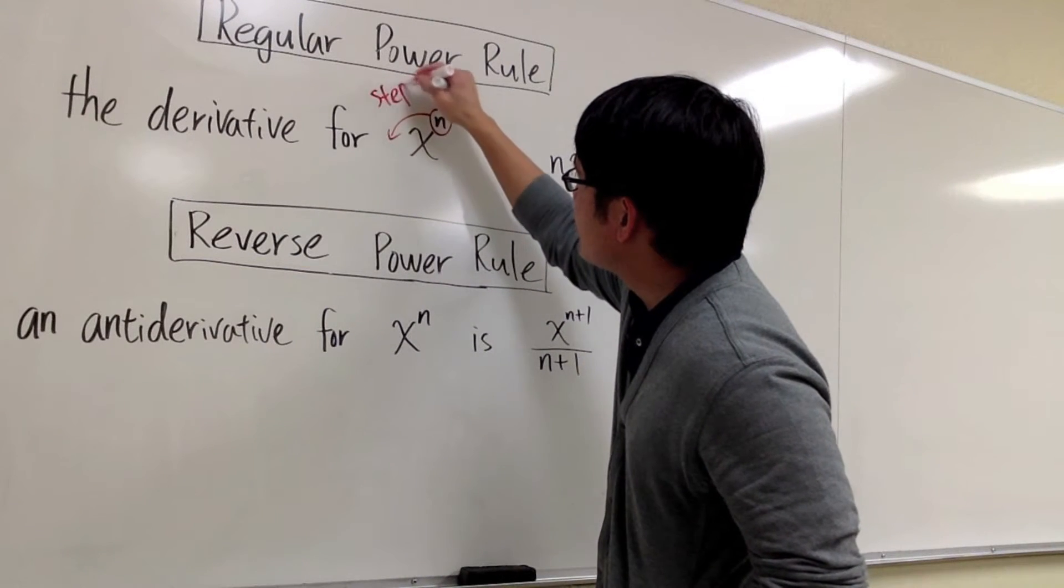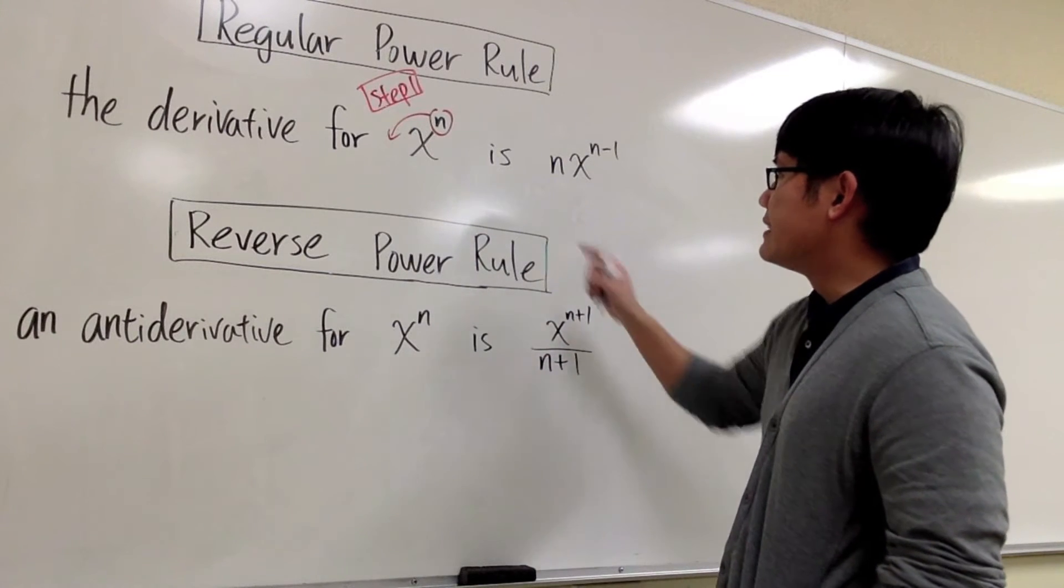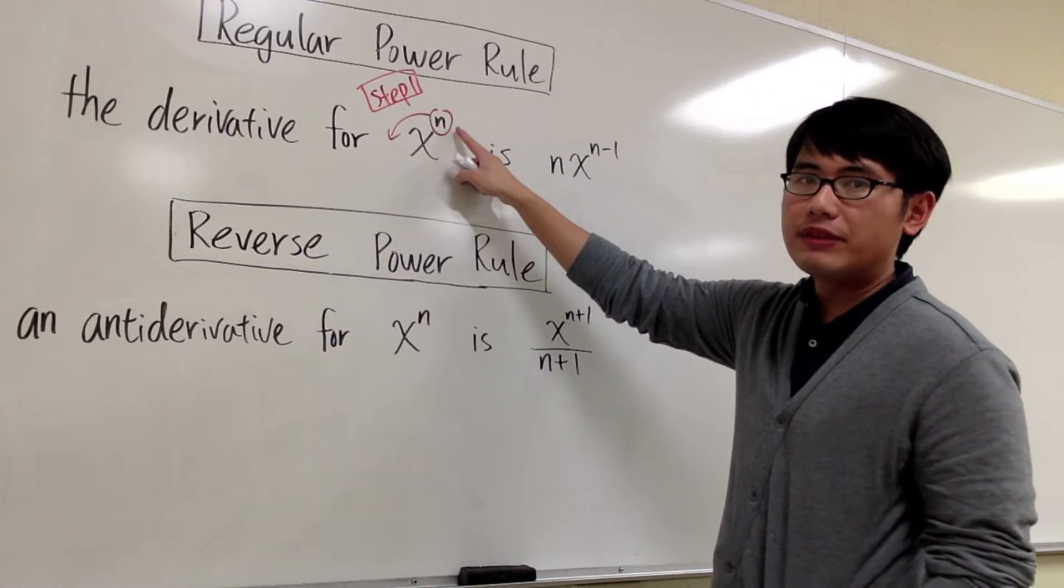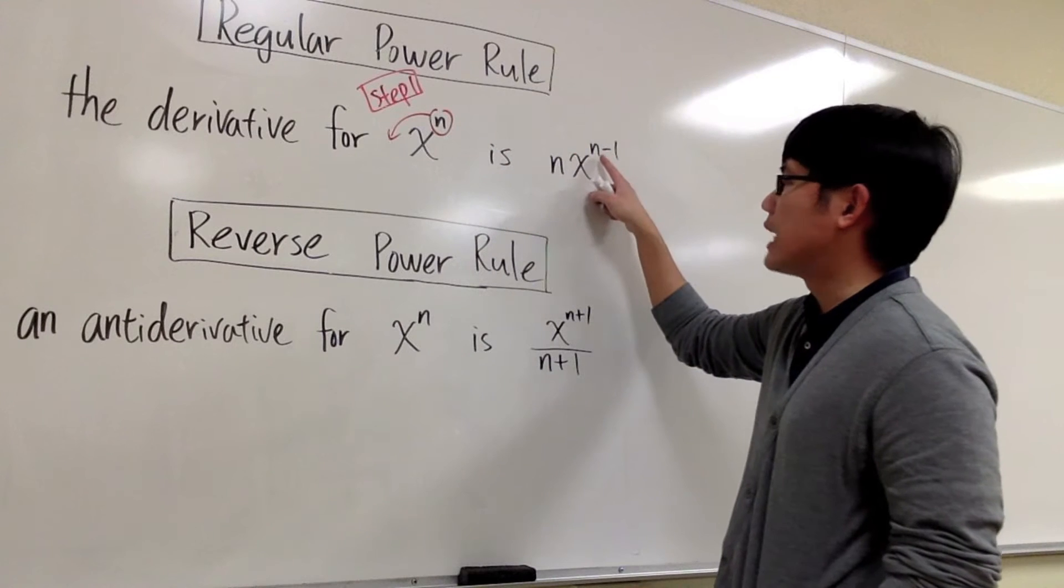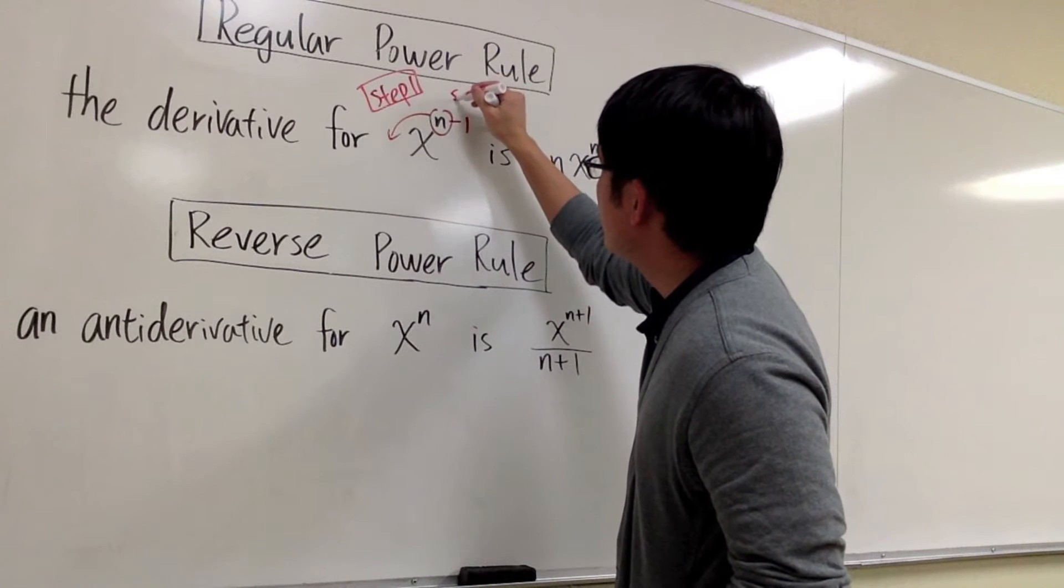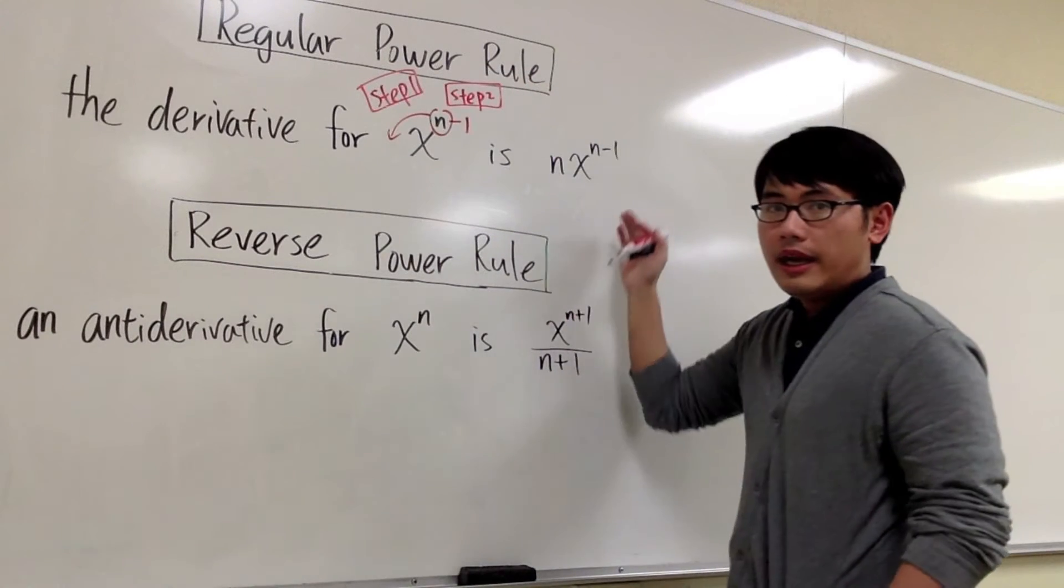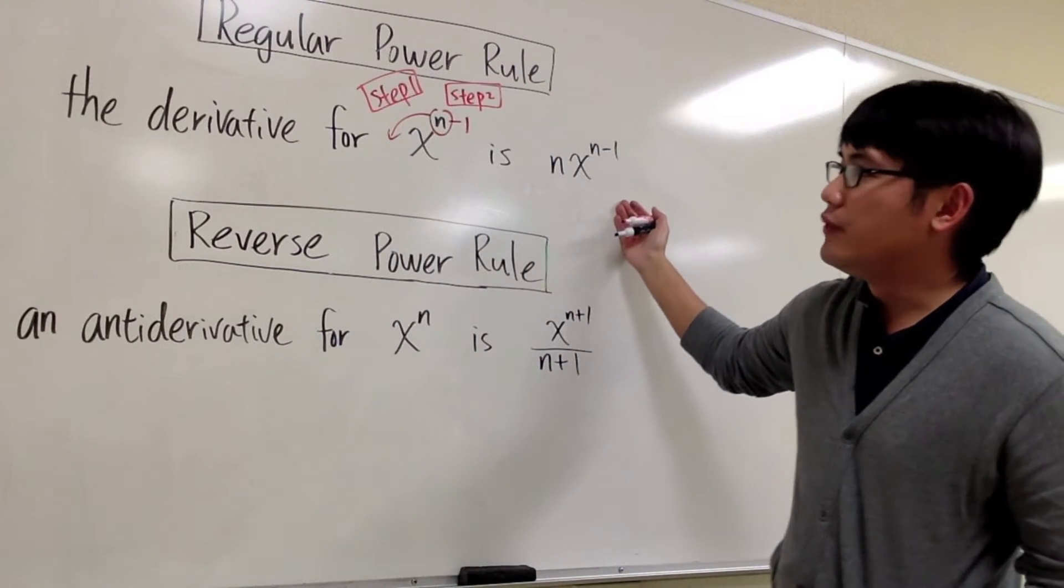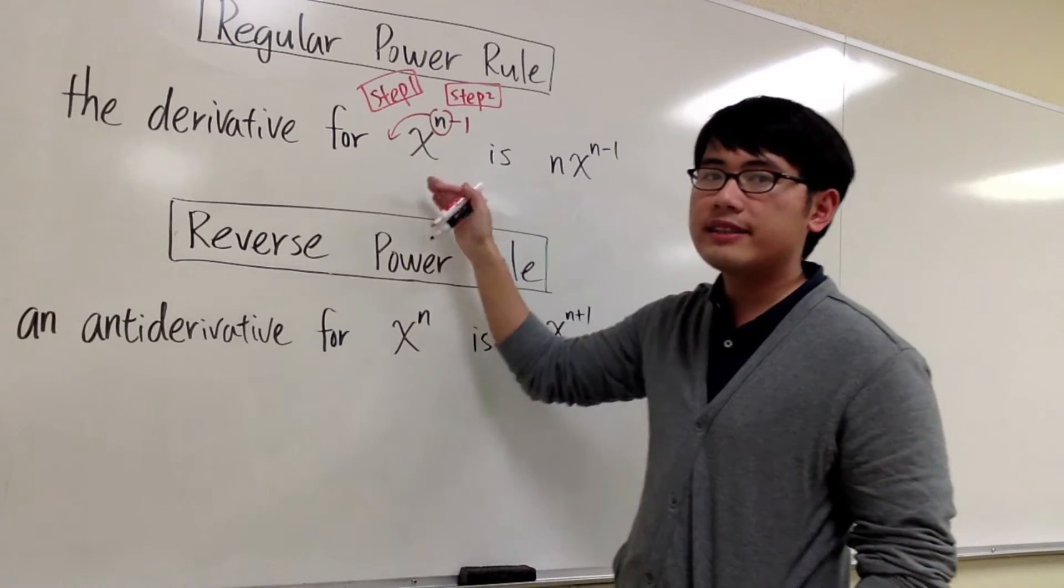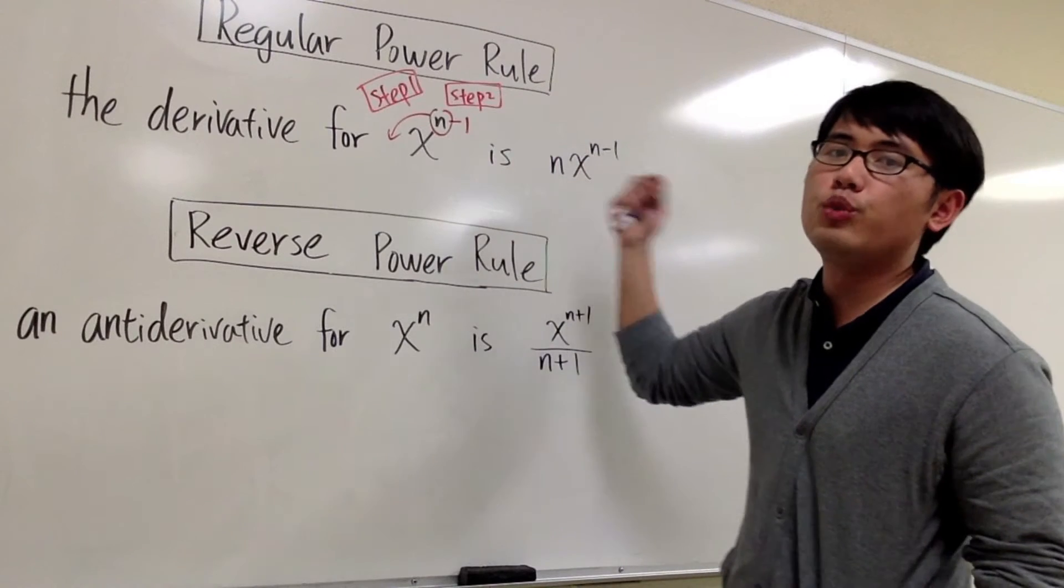Let me write this down. This right here is step 1. Secondly, what we do is we have to subtract 1 from the exponent, and that's how we get the n minus 1. So we minus 1 right here to the exponent, and this is step 2. And what we are saying is that if you want to find the derivative of x to the n power, all you need to do is step 1 and step 2, and you will get your answer.